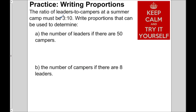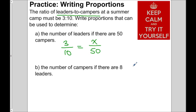Let's start with the known ratio of 3 to 10. For 50 campers: the second number represents campers, so I put 50 on the bottom of the second ratio, and X for the unknown number of leaders on top — giving 3 over 10 equals X over 50. Similarly, starting with 3 over 10: if there are 8 leaders, I put 8 in the numerator, and the unknown number of campers goes on the bottom.